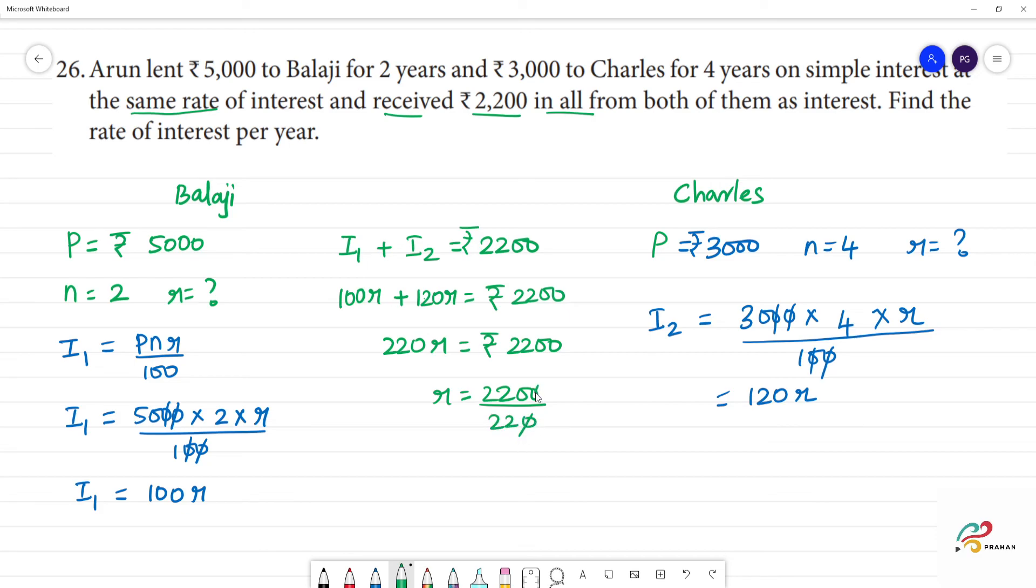What we get is 10. This is 10 percentage. R is equal to 10 percentage.